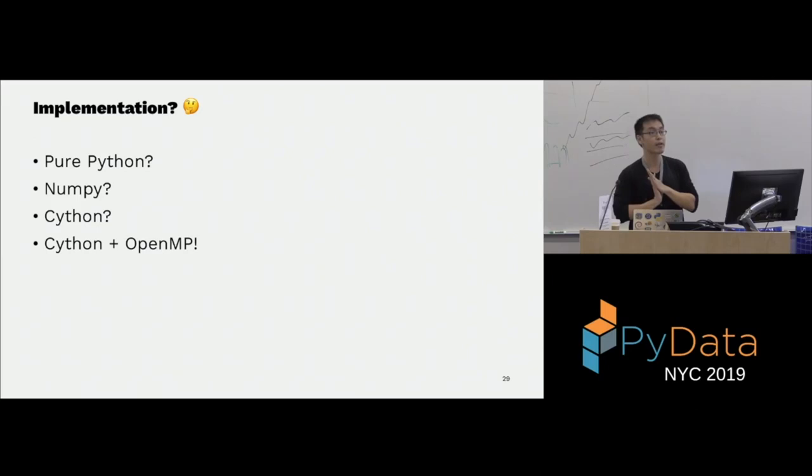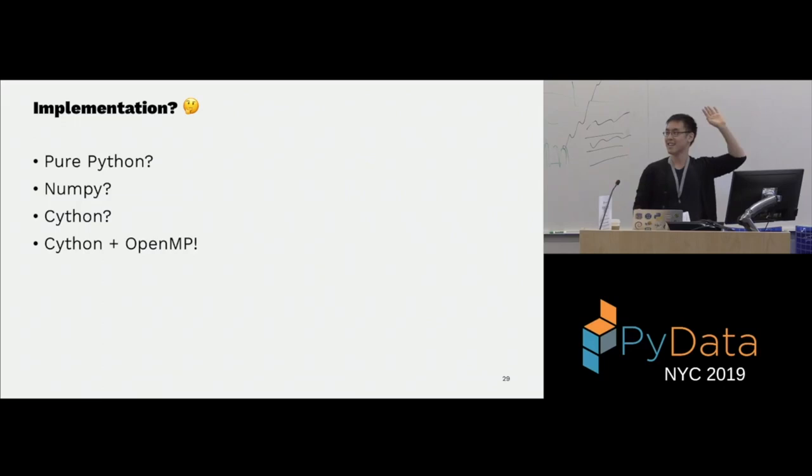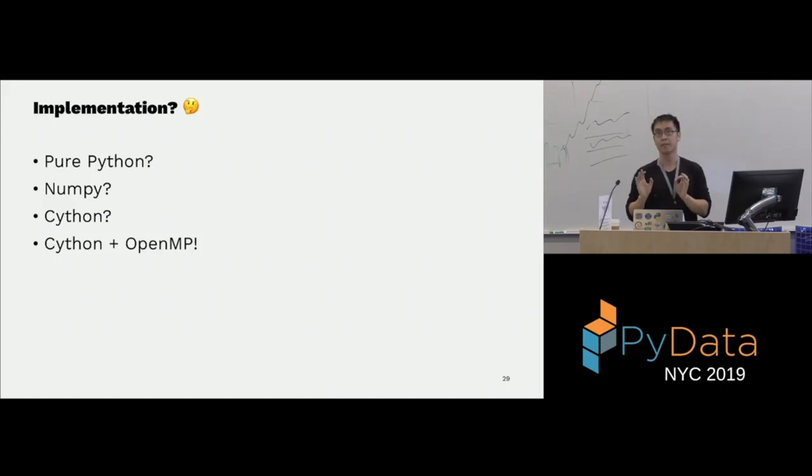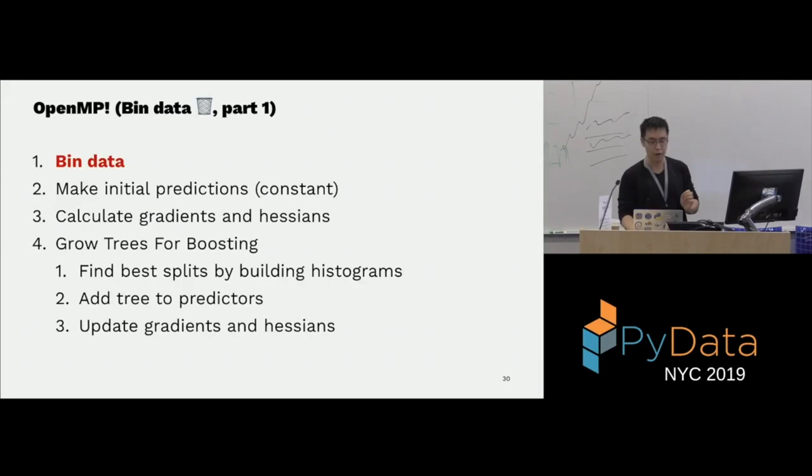So we take advantage of OpenMP, which allows us to parallelize our code. Cython is very similar to Python, but you can compile it and it runs much faster. I'm going to show you parts of the code where we take advantage of OpenMP. There are many ways to parallelize our code.